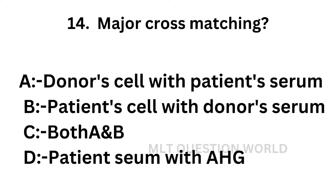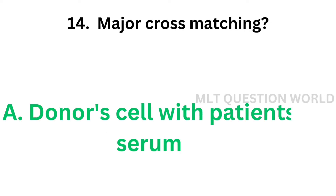Question 14: Major cross matching — option A: Donor cell with patient serum, option B: Patient cell with donor serum, option C: Both A and B, option D: Patient serum with anti-human globulin. Major cross matching is the testing of red cells with recipient serum to detect unexpected antibodies in recipient serum that will destroy the donor's red cells. The correct answer is option A, donor cell with patient serum.